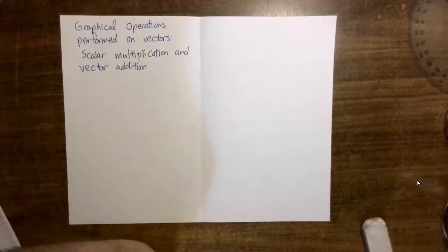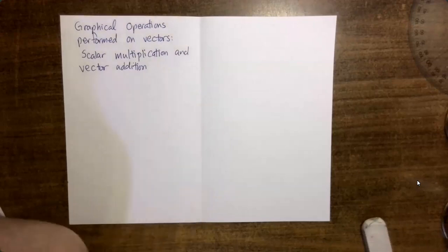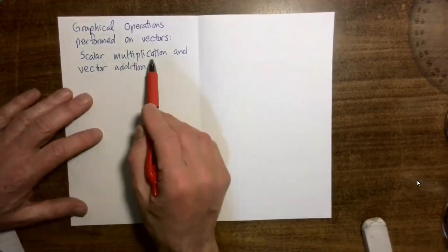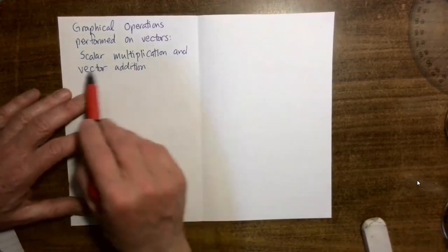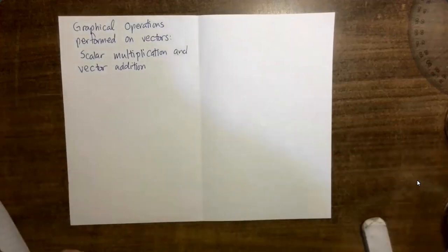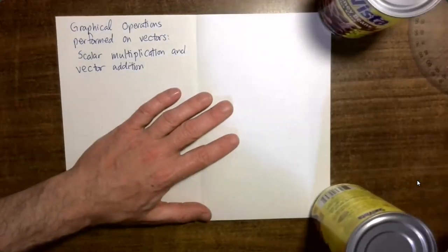In this video, we're going to go over two basic operations that can be performed on vectors using graphical methods without using any explicit calculations. Specifically, we are going to be looking at scalar multiplication — that's the first one — and vector addition — that's the second one. Let's start by looking at scalar multiplication.